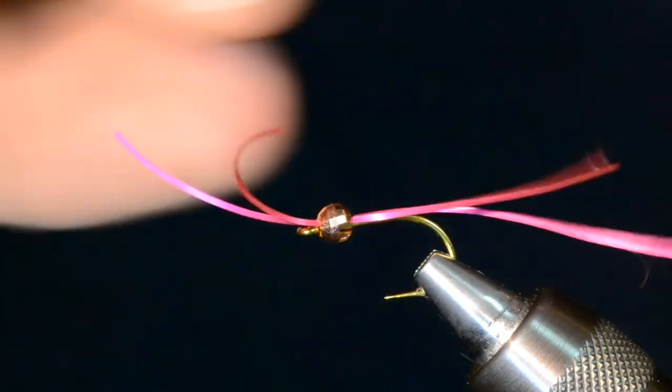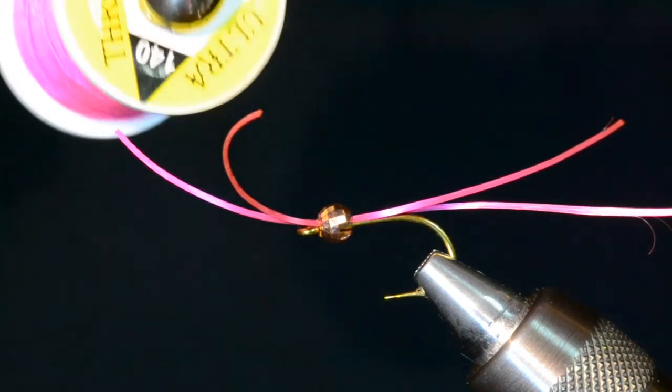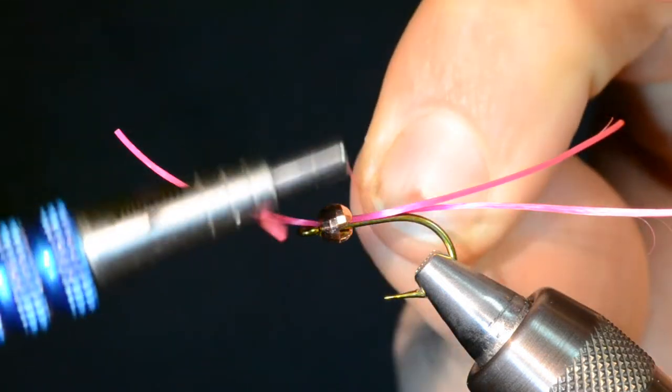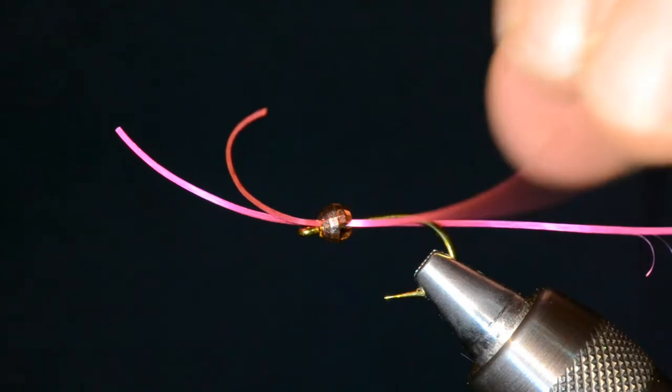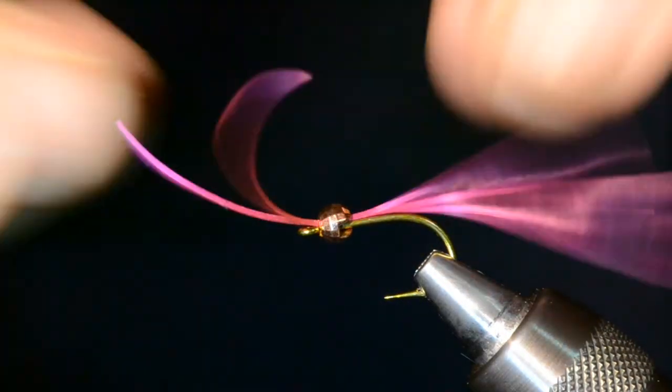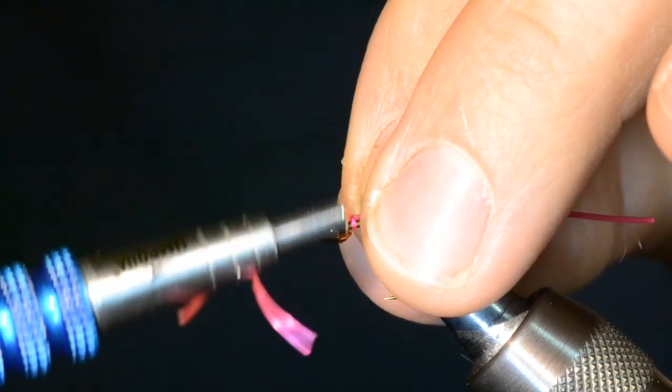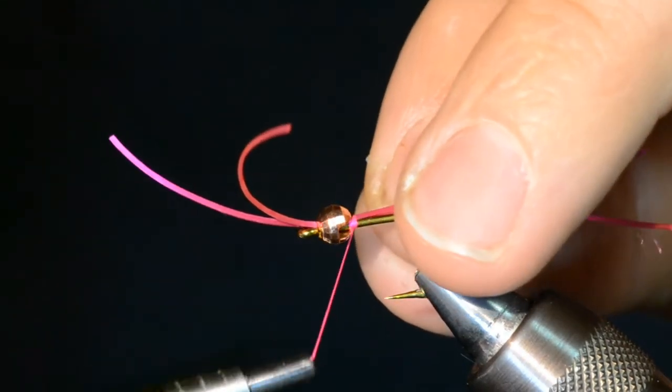All right, so now we'll grab our ultra thread 140 in this fluorescent pink color and start the thread right behind the bead. I want these legs to be up on top of the hook shank as well there, so I'll reposition that. A couple soft wraps there just to make sure stuff's positioned where I want it. Looks pretty good.